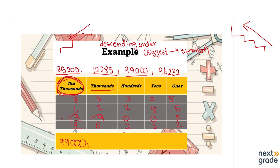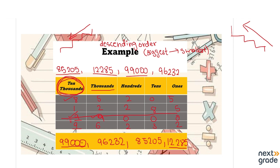So we write 99,000 first. Since we are done with that, we move to 96,232, which is smaller than 99,000, so it comes next. Then comes the number with 8 in the thousands place, which is 85,205. And the last number is 12,285, the smallest. So 12,285 is the smallest and 99,000 is the biggest. This is how you solve a descending order question. See you in the next video — I hope you understood. If you have any questions, just let me know.